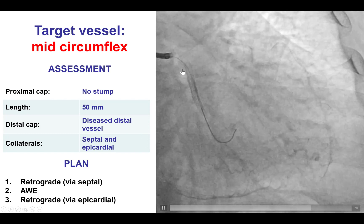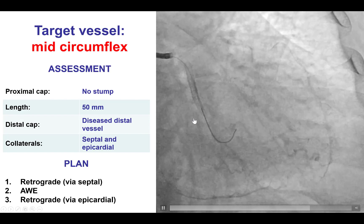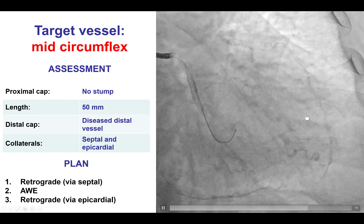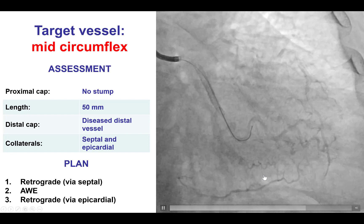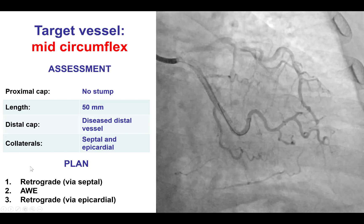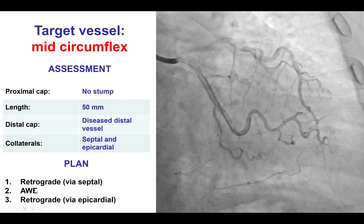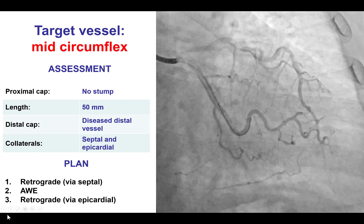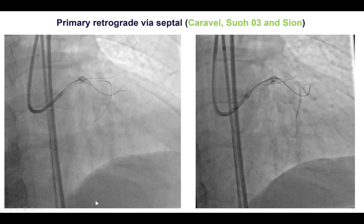To summarize: we have a CTO of the circumflex, we do not know where the CTO starts, and the length is long at about 50 millimeters. The distal vessel is diffusely diseased and fills via epicardial collaterals from the first obtuse marginal branch, but also through an acute marginal branch. Therefore, our plan was to do retrograde via septal first; if that didn't work, to do antegrade wire escalation trying to use IVUS for clarifying the origin of the circumflex; and lastly, to do retrograde via epicardial if the former approaches failed.